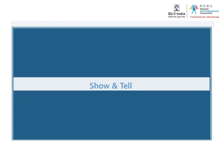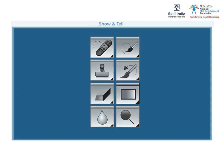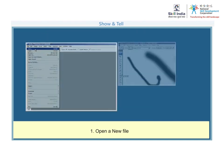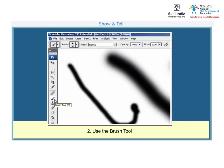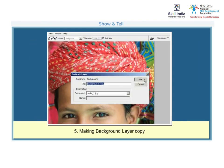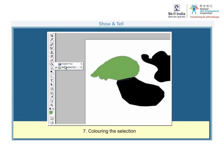This is a Show and Tell module. Here are the broad steps of what we will learn: open a new file, use the Brush tool, use the Pencil tool, use the Color Replacement tool, make a Background Layer copy, learn about the Pen tool and converting the path to a selection, and coloring the selection.